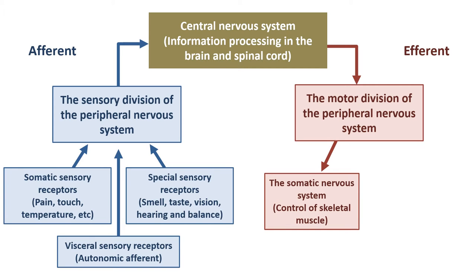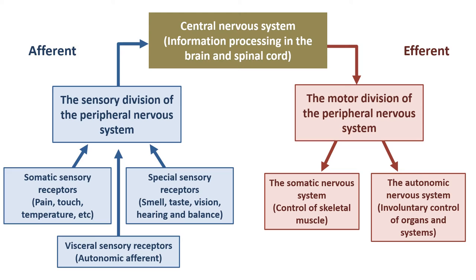The most obvious branch is the somatic nervous system, or the somatic branch of the motor division. This is the one we talked about when we covered excitation-contraction coupling. These are motor neurons coming out to neuromuscular junctions, causing the contraction of skeletal muscle.